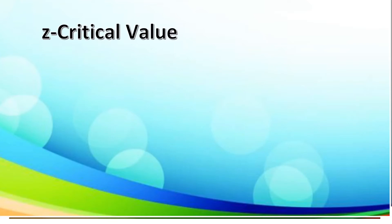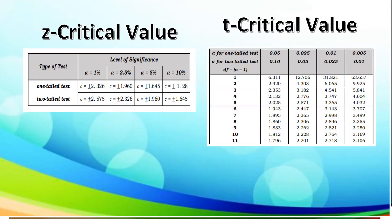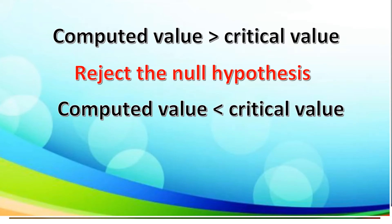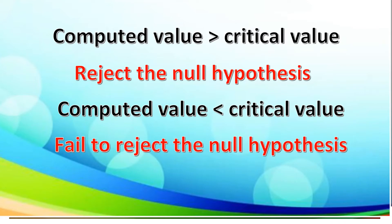Let us recall the tables we are going to use for our critical value: the Z critical value table and the T critical value table, or T table. If the computed value is greater than the critical value, reject the null hypothesis. If the computed value is less than the critical value, we fail to reject the null hypothesis. Rejecting the null hypothesis doesn't mean it is incorrect; the collected data suggests sufficient evidence to disprove it. Similarly, failing to reject does not mean it is true — only that there is insufficient evidence to disprove it.